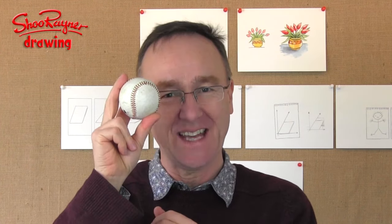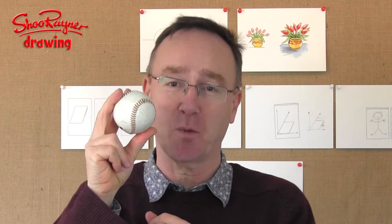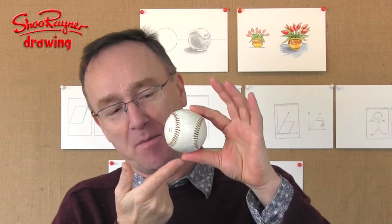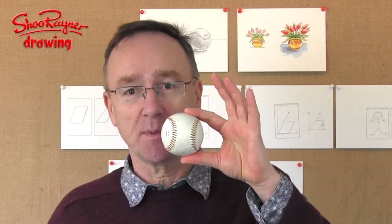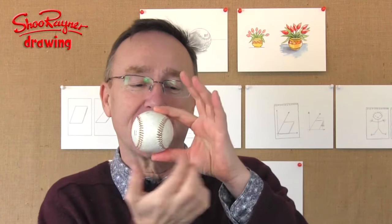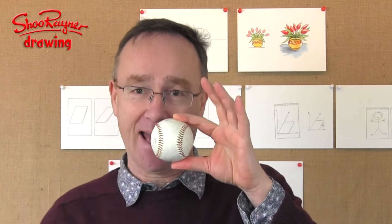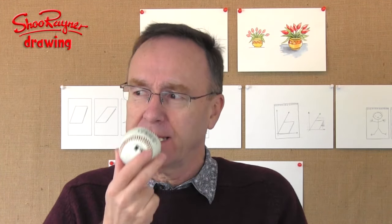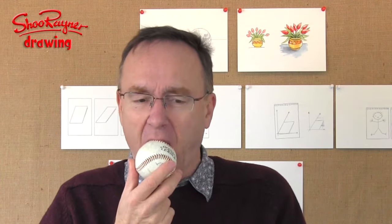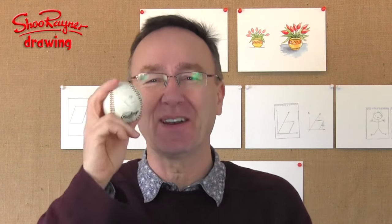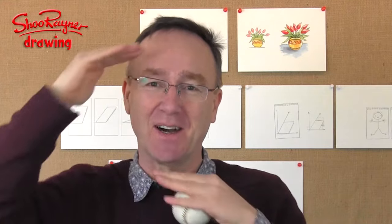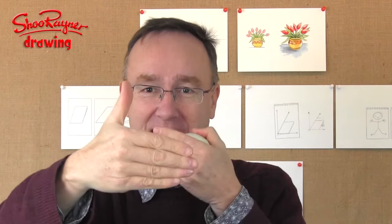A ball is a three-dimensional object. It has height from the bottom to the top, it has width from one side to another, and it has depth from the front to the back. You can feel it, you can touch it, you can smell it — well, maybe not — and you can throw it up in the air and catch it. It is a three-dimensional object within a three-dimensional space of height, width and depth.